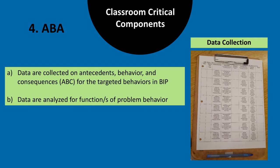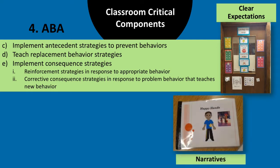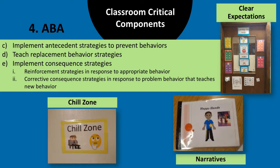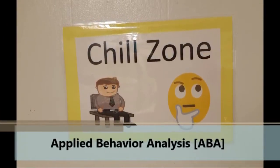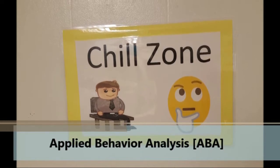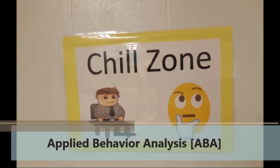Data are analyzed to determine the hypothesized function of the problem behavior. Once the function is determined, we can implement antecedent strategies to prevent behaviors, teach replacement behaviors so students know what to do instead while still meeting their needs, and implement consequence strategies to reinforce appropriate behaviors and respond to problem behaviors. This video clip shows how the teacher uses a chill zone to teach students self-regulation, as well as the use of structure, organization, and routine as an antecedent strategy to prevent problem behavior.